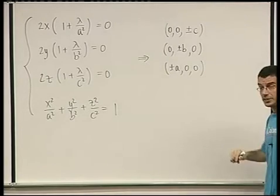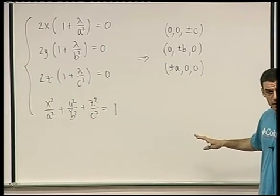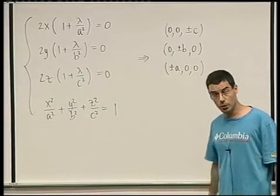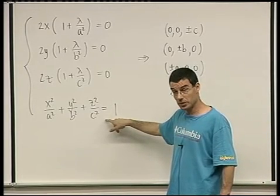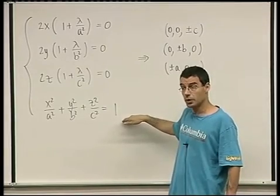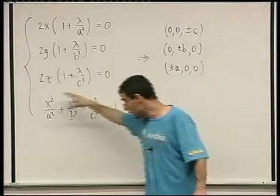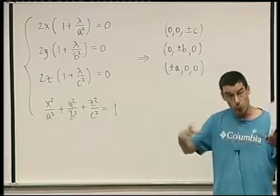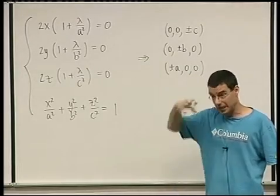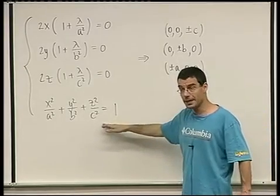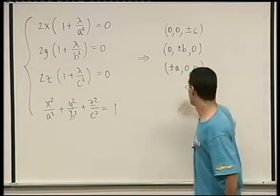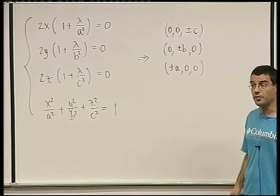By a Weierstrass-type argument: what is the domain? This constraint defines an ellipsoid. An ellipsoid is a bounded, closed domain — we're looking only at the surface of the ellipsoid, not the inside. By Weierstrass, f is continuous on a bounded, closed domain, so it has a minimum and a maximum. Therefore these six candidates are all of them, and we just have to calculate the value of f at each one.